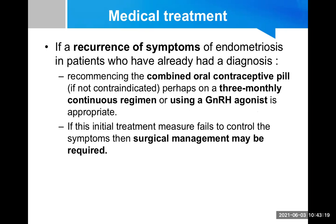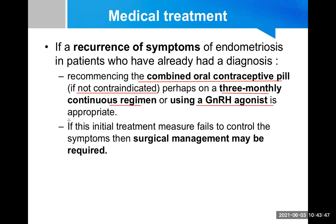If symptoms of endometriosis recur in a patient who already has a diagnosis, we use similar therapy — recommencing the combined oral contraceptive pill, perhaps on a three-monthly continuous regimen, or using a GnRH agonist. If initial treatment fails to control symptoms, surgical management may be required.